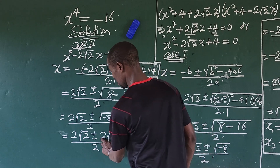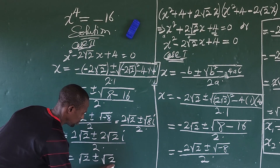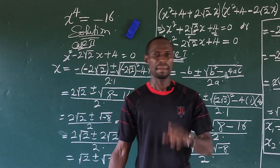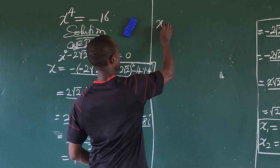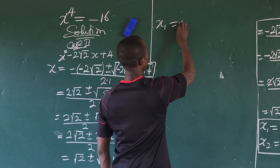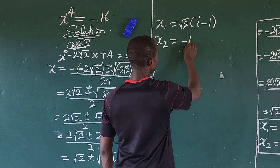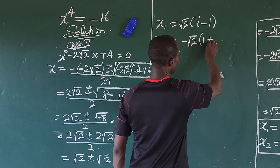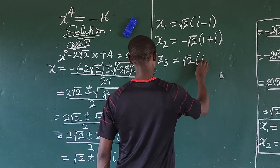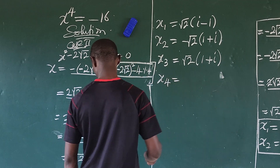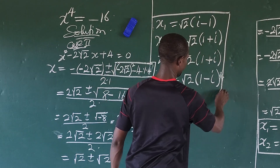Factoring out 2 from the numerator gives x = √2 ± √2·i. So x₃ = √2(1 + i) and x₄ = √2(1 − i). We now have all four roots of the equation.